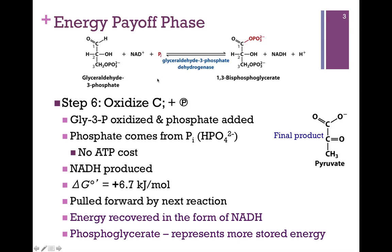This is the energy payoff phase, not energy investment, so it doesn't cost any more energy. In the process, since I'm oxidizing the glyceraldehyde-3-phosphate, I'm reducing NAD⁺ to form NADH. Remember, that represents another form of stored energy. The standard delta G is slightly unfavorable, but we're going to pull it forward by the next reaction. It's still a near-equilibrium reaction, and therefore we have the double arrows indicating that it's reversible. So we recover energy in the form of NADH, and we also have a certain amount of stored energy in that phosphoglycerate, as we'll see in the next reaction.